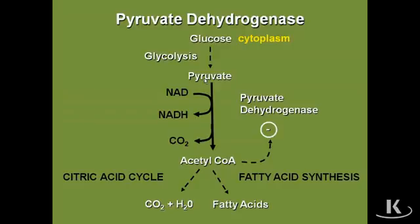Once pyruvate is generated, it then goes into the mitochondria. When it goes into the mitochondria of any cell that has a mitochondria — obviously not the erythrocyte — pyruvate encounters a very, very important enzyme called pyruvate dehydrogenase, abbreviated PDH.